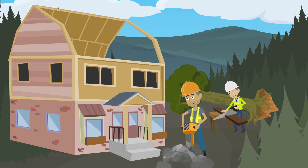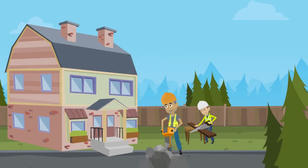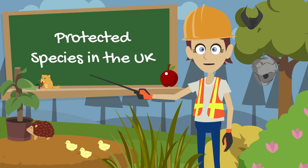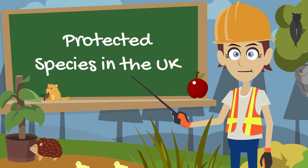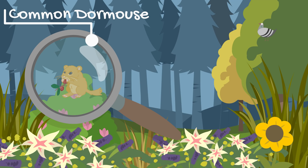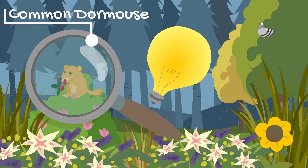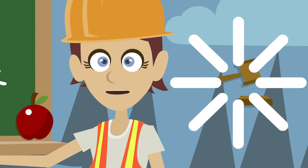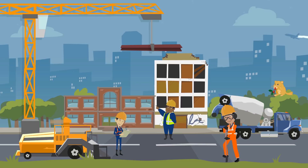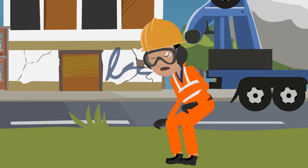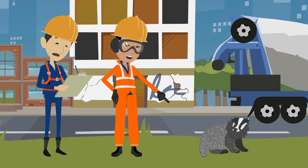In construction we come across a wide range of biodiversity on both green and brownfield sites, particularly if a site has been left undisturbed or derelict for some time. We're going to go through some of the more common species which are legally protected in the UK, to help you identify them and know what to do if you find them. If you ever find what you think is a protected species, stop work as soon as safe to do so and report it to the site manager or site ecologist if you have one.